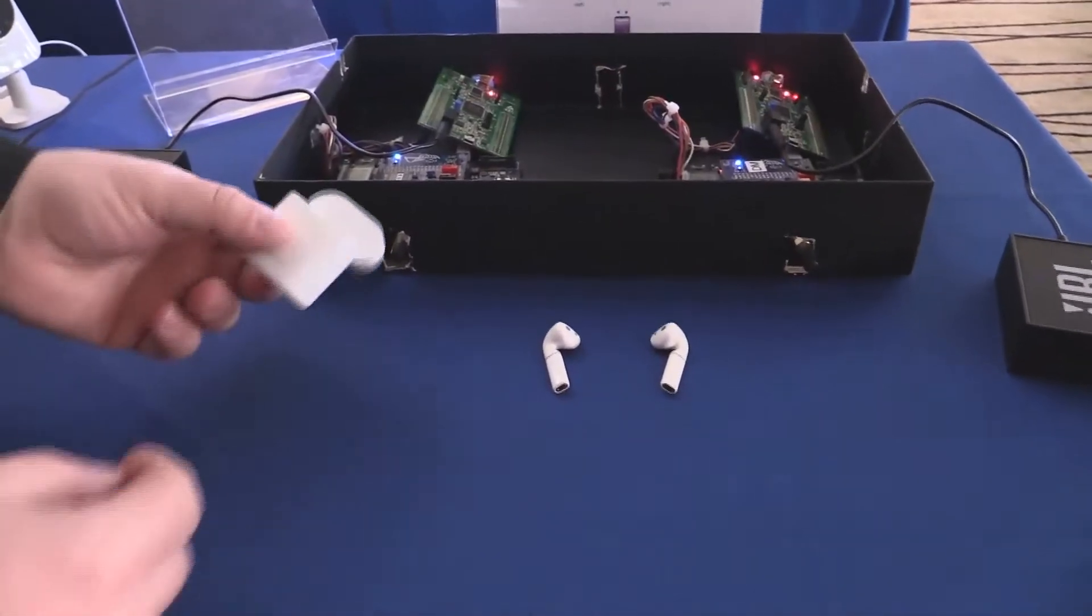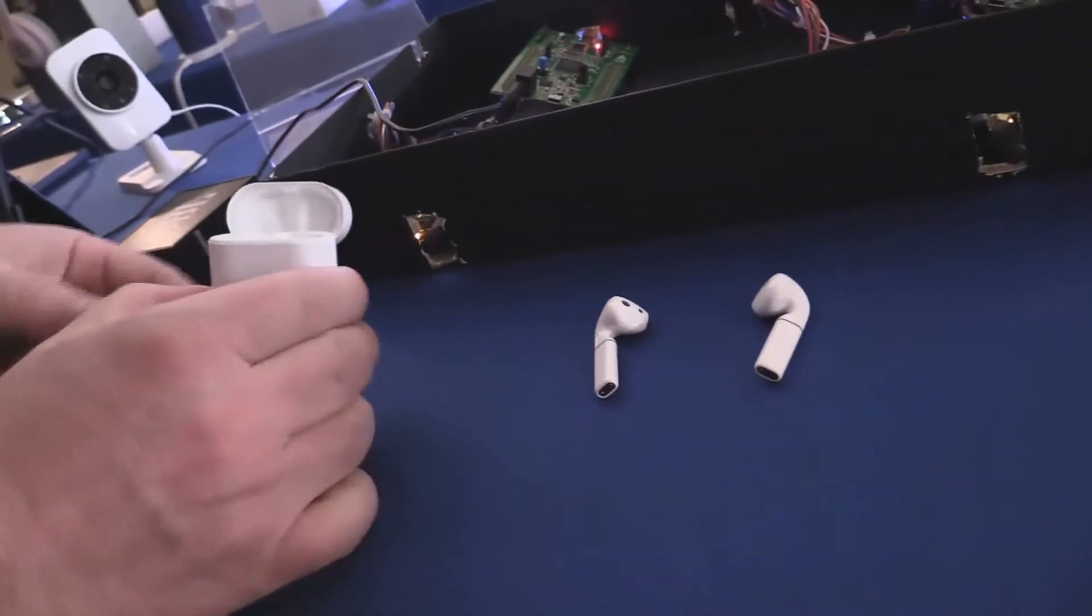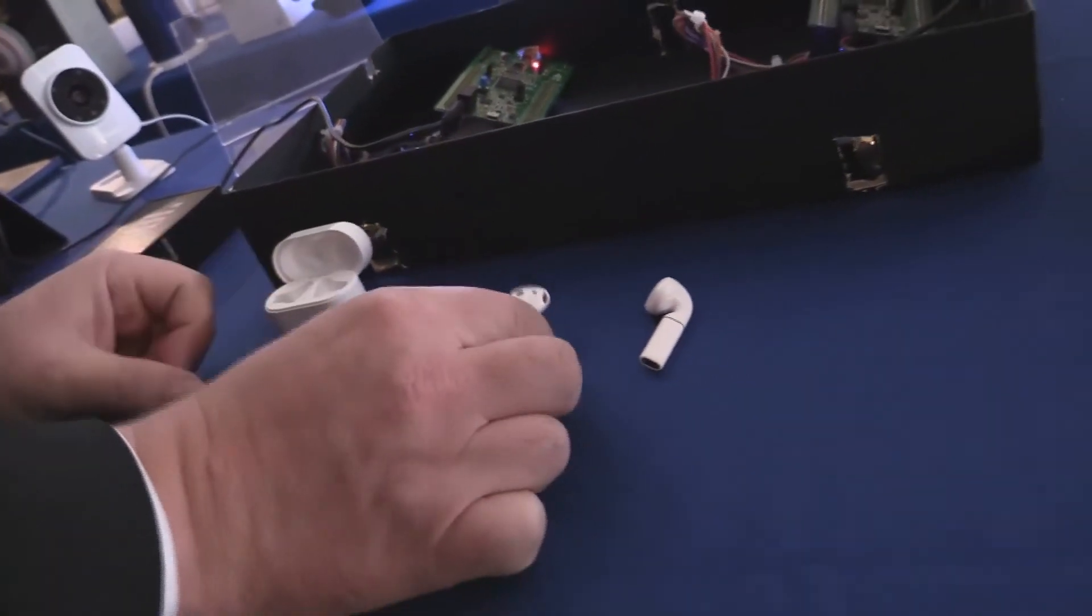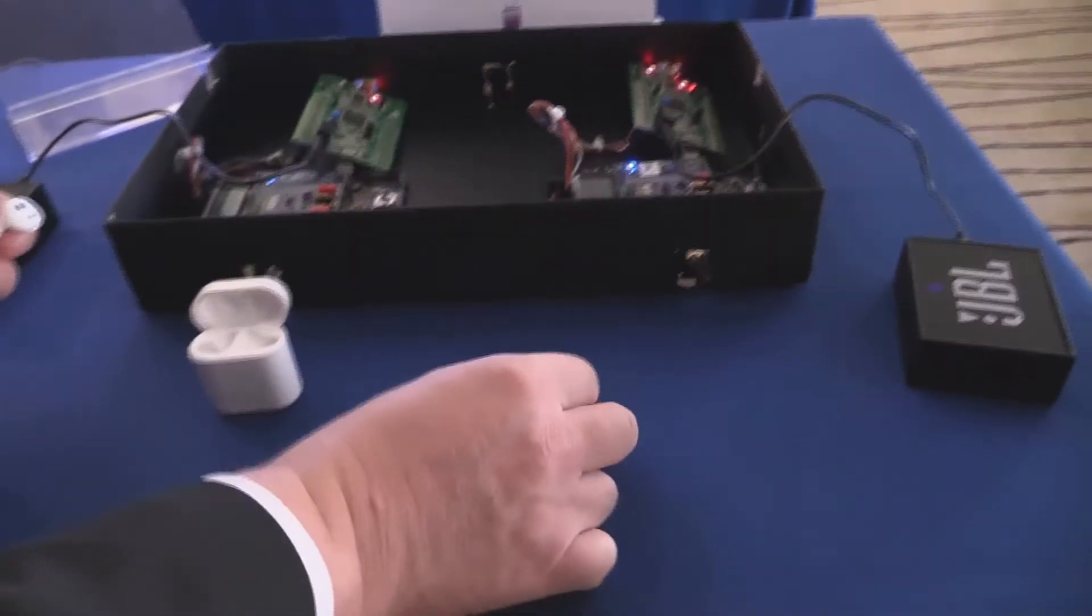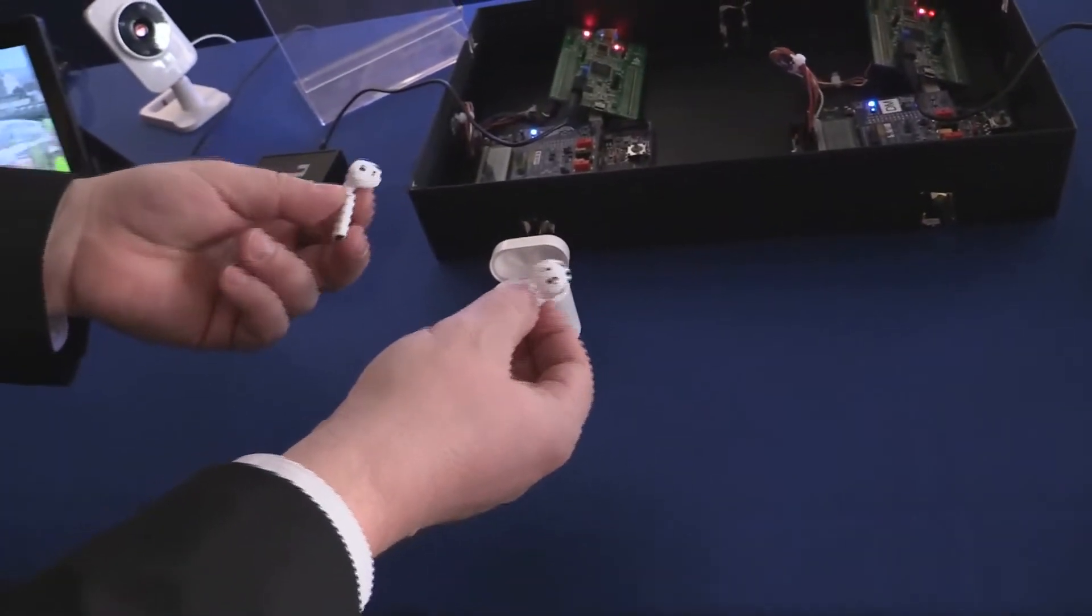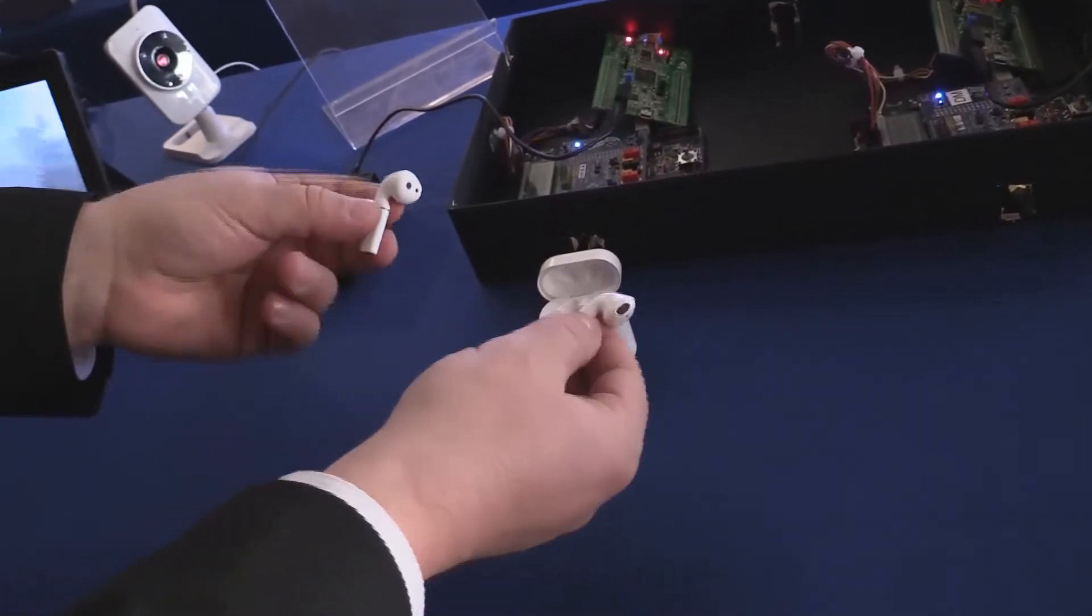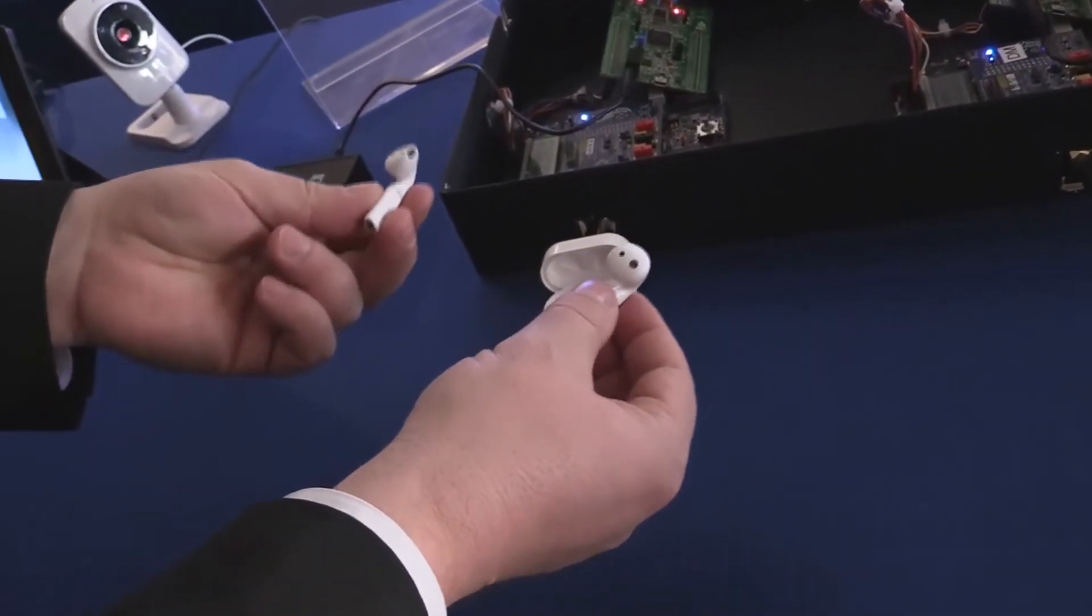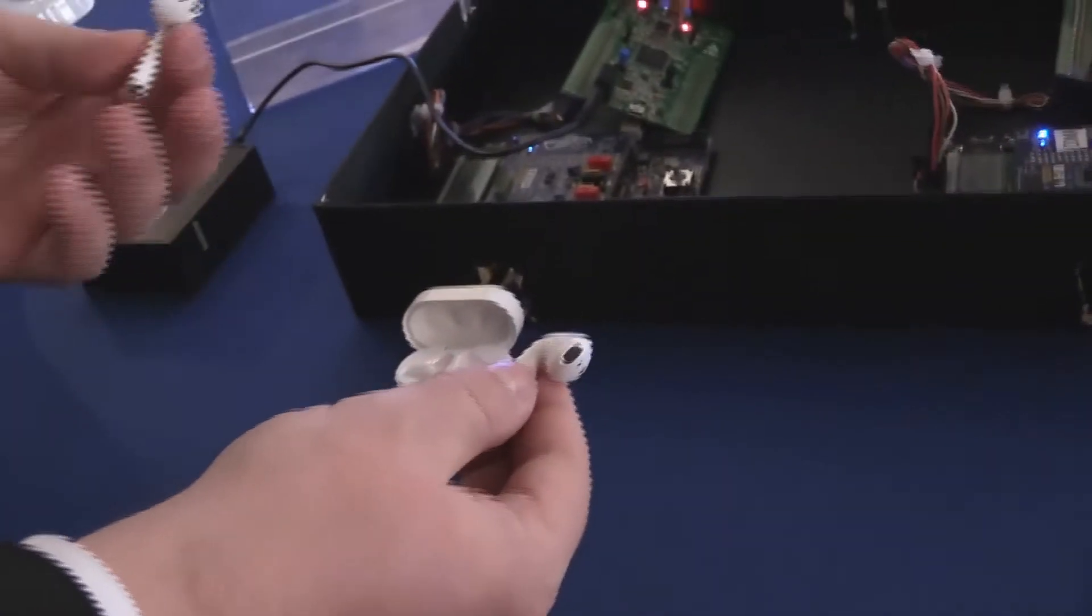OK, as an example, this is an end product, the Huawei Honor FreeBud, which is a pair of earbuds using the CEVA technology. So this is a true wireless stereo solution which can be connected to any smartphone, Android or iOS. This is a product which has been released on the market very recently.